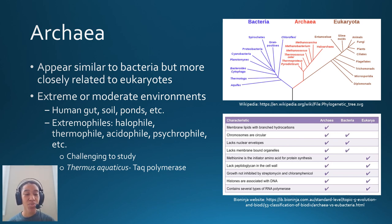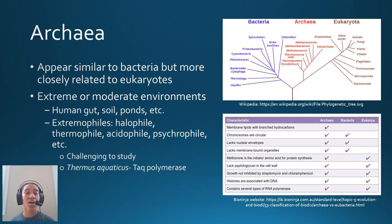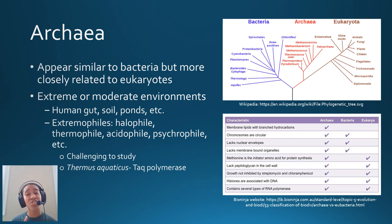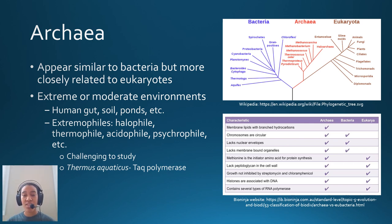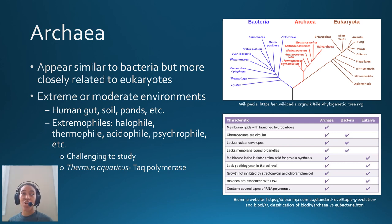Welcome everyone to part two. This section will cover archaea, protists, viruses, and prions. First we'll talk about archaea. Archaea are visually similar to bacteria — if you looked at them you'd say they're bacteria, but they're not even closely related to bacteria. They're actually closer related to eukaryotes than to prokaryotes. This table shows some of the reasons why archaea are not prokaryotes — they share some commonalities with bacteria but actually share more with eukarya. There's no need to memorize this table.